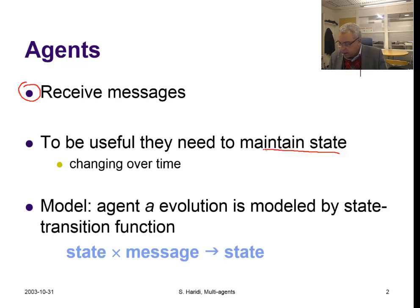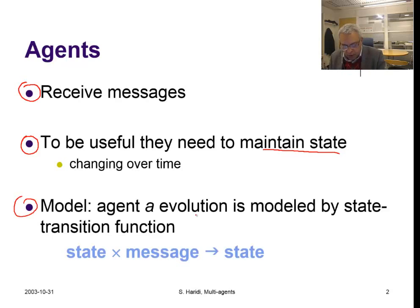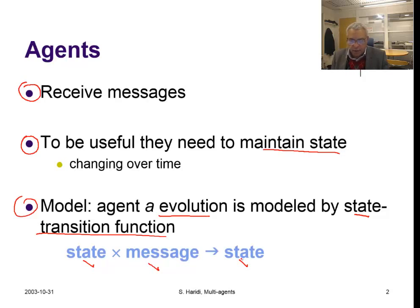We will show that we can add state to this model. Once an agent receives a message, it will apply a state transition function to the state and the message — that produces some action and a new state. That is the model we would like to have, and we can define this completely in the declarative functional model. An agent's evolution is modeled by a state transition function: it takes the current state, a message it receives, transforms itself to a new state, and possibly does some action like sending messages to other agents.